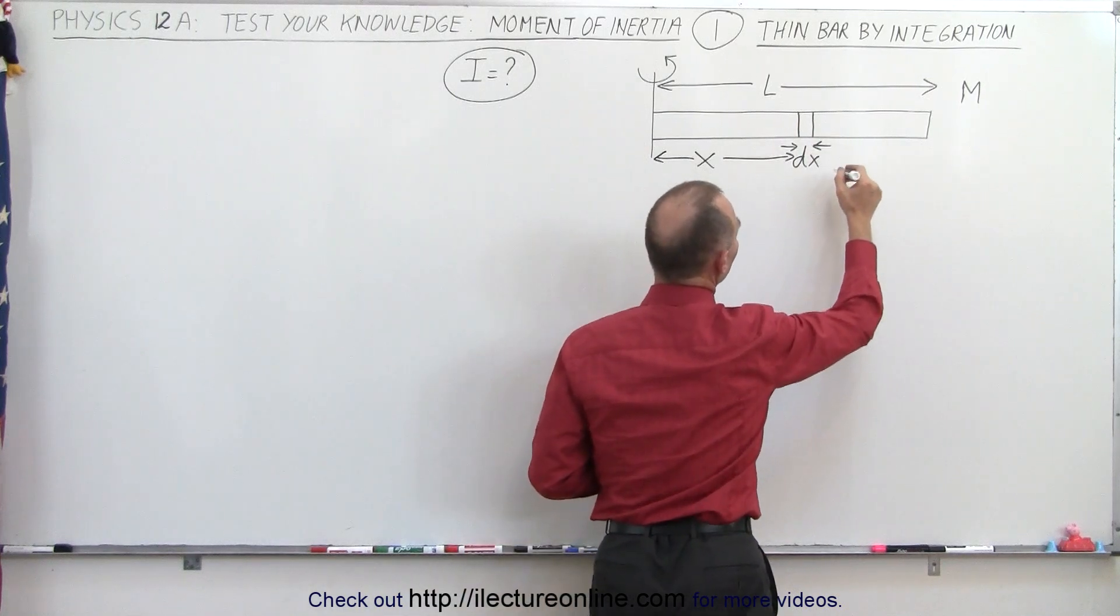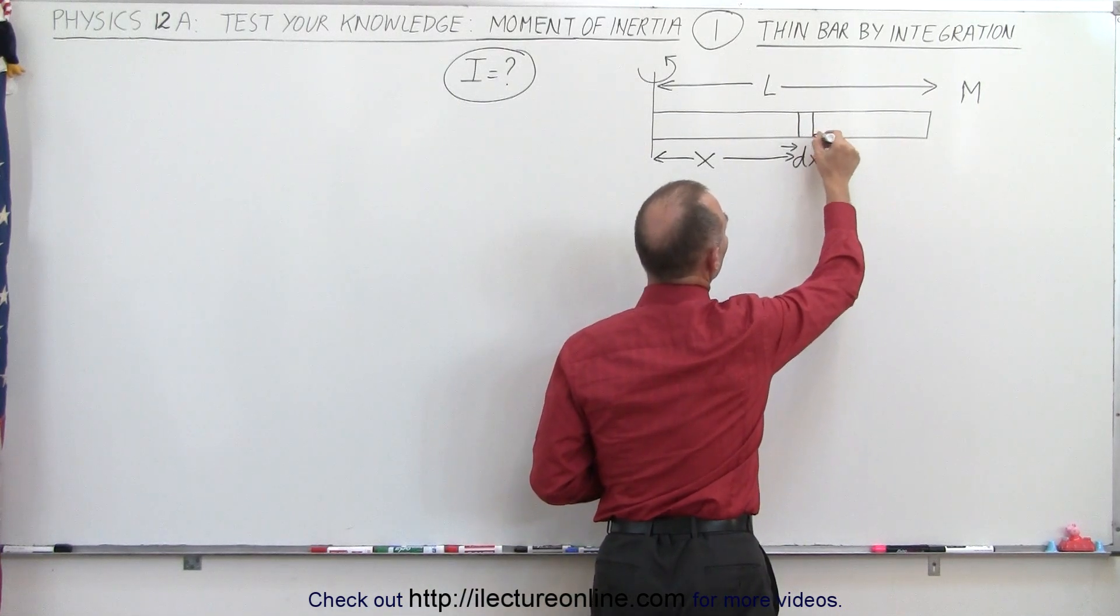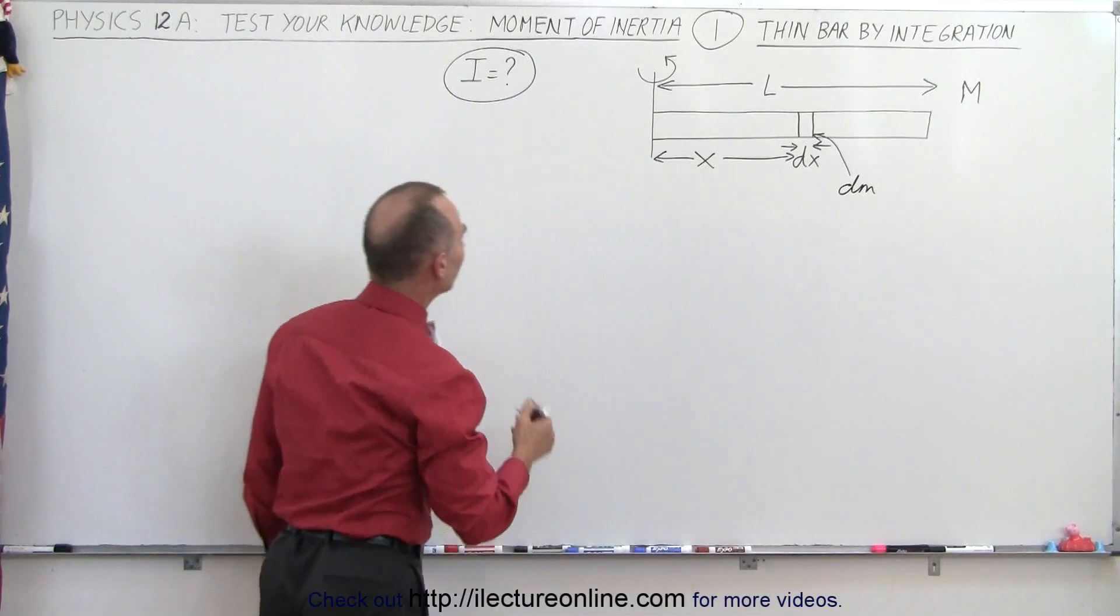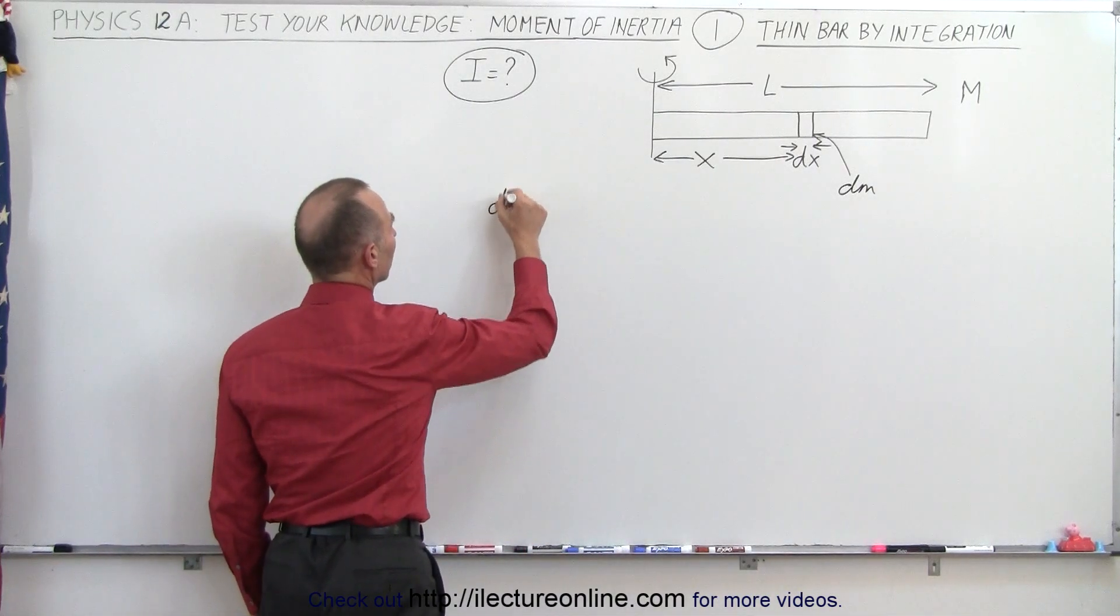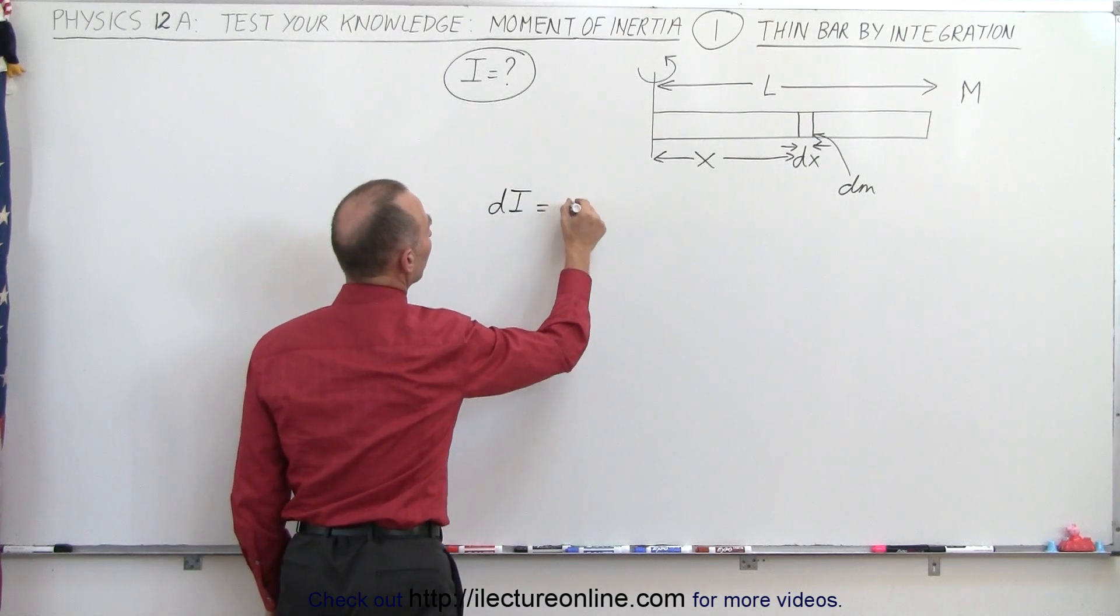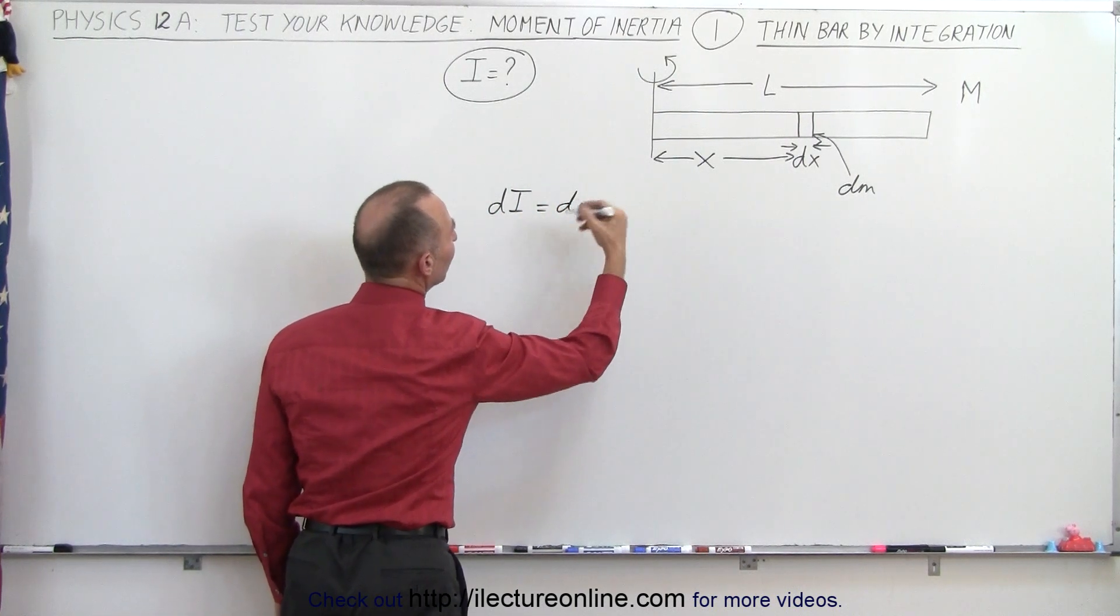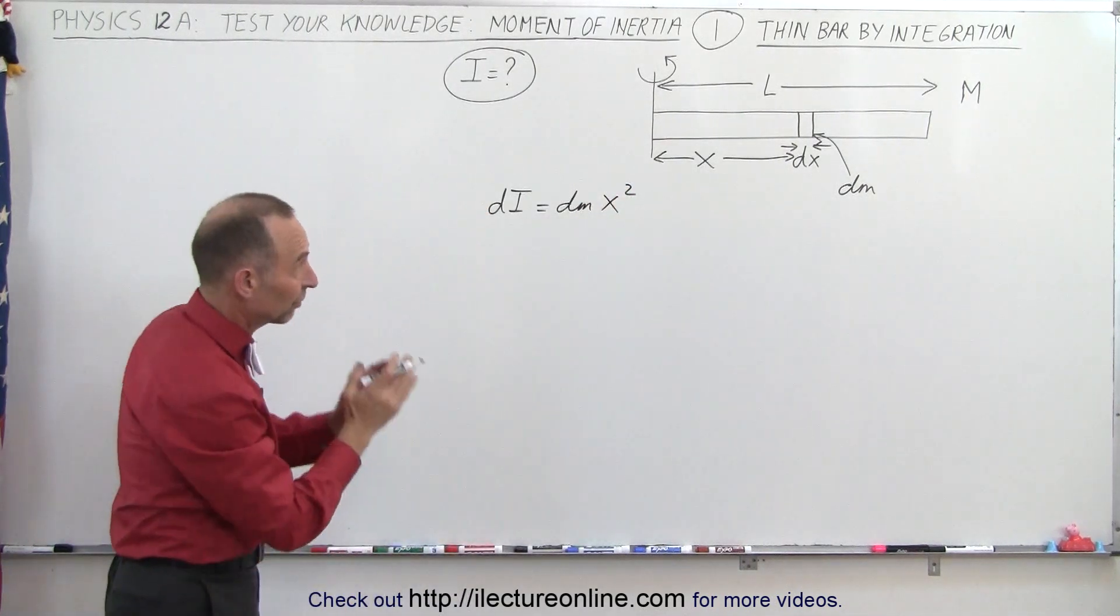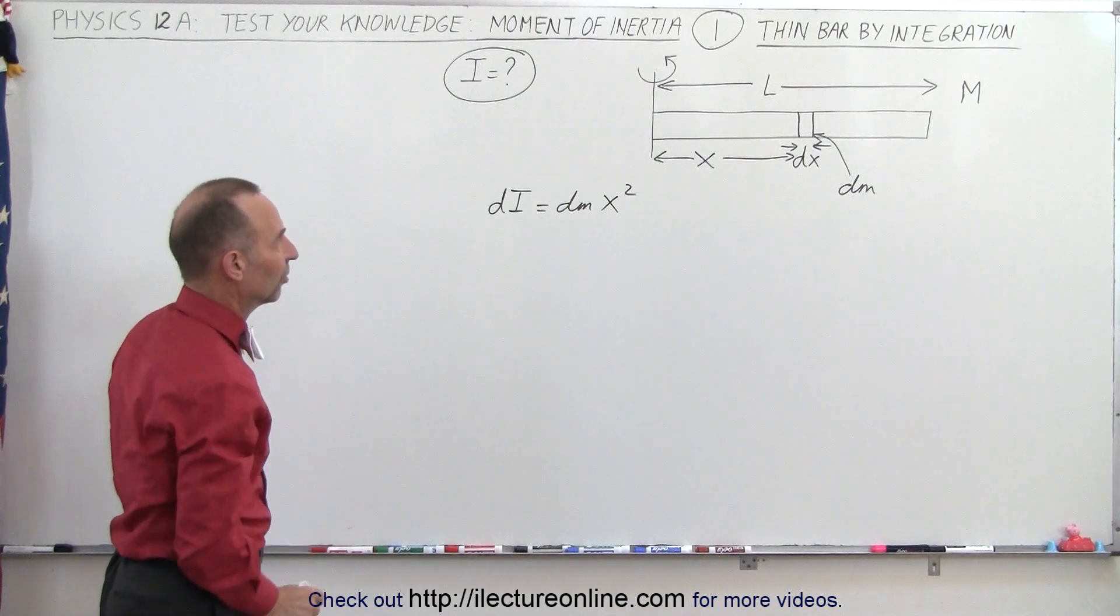Also what we can say is that this little segment has a mass, let's call it equal to dm. And so therefore what we can do then is we can say that the small little moment of inertia due to that small little segment is equal to the mass dm times the distance squared, that would be x squared. So that would be the moment of inertia of the small little thing rotating about the axis.